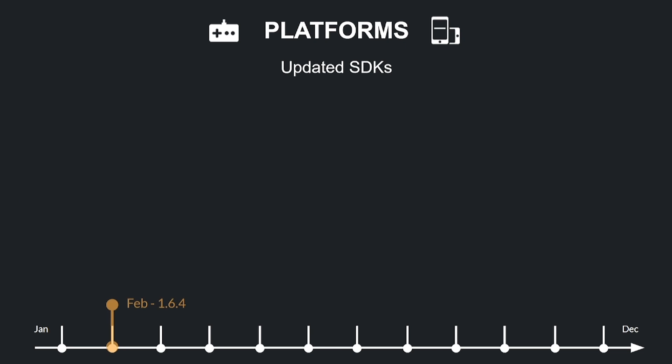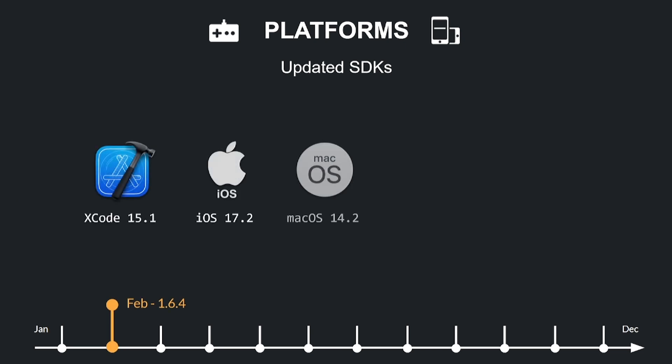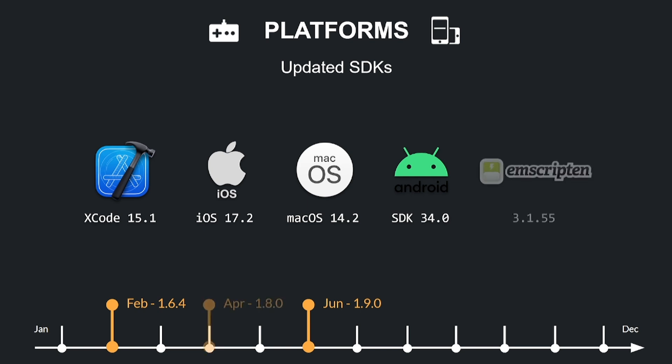Maintaining a game engine is all about supporting the newest technology. Default is constantly doing work to support the newest platforms, operating systems, and align with provider requirements. Default was updated to the latest Xcode, iOS, and macOS, ensuring compatibility with the latest Apple SDKs. For Android, they updated to SDK 34 and set the target SDK version to 34, ensuring compatibility with modern Android versions. For web, they upgraded to Emscripten 3.1.55, enhancing performance in HTML builds and preparing for future WebGPU support.